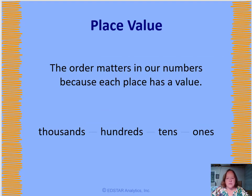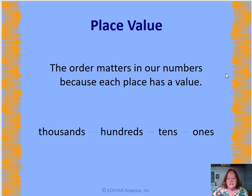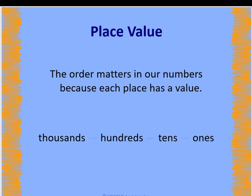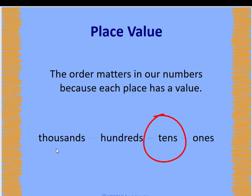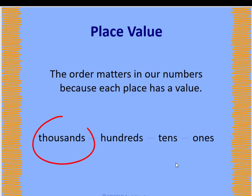Now that brings us to place value. You probably wondered what's all this got to do with place value. Here's what it has to do with place value: the order matters in a number because each place has a value. That's why we call it place value. The ones place is furthest to the right in a number, and then the tens place, and then the hundreds, and then the thousands, and it could go on and on. So every place in a number has a value.